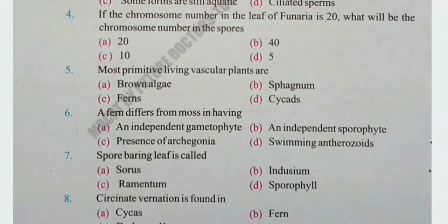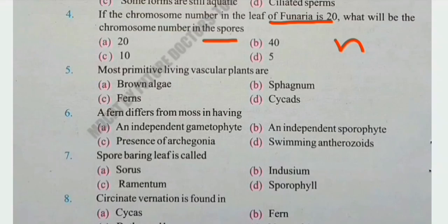Number 4: If the chromosome number in the leaf of Funeria is 20, what will be the chromosome number in spores? Spores are haploid, meaning they have N number of chromosomes, while leaves have 2N. So spores have half the chromosome number of leaves. The right answer is C, 10.